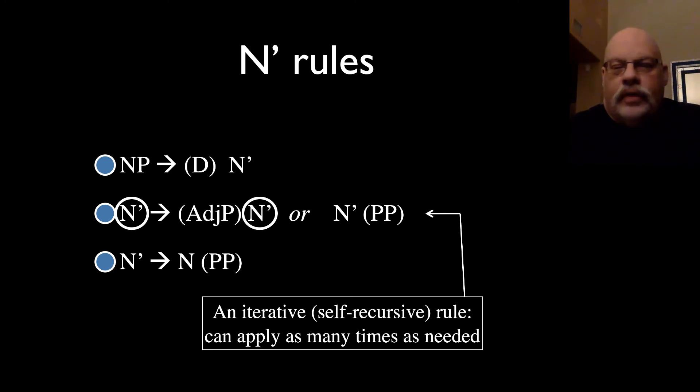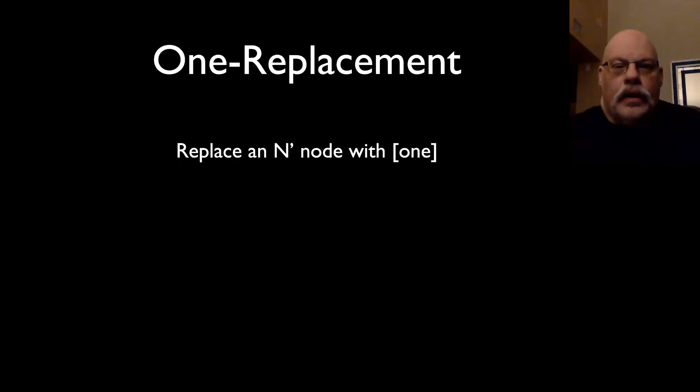Notice that the second rule has an interesting property. It's internally recursive or iterative. It can apply as many times as needed. So you can take an N bar category and create a new N bar category, create a new N bar category, et cetera. This means you can get as many of these adjectival and prepositional modifiers as you want. That's a neat effect. And it actually allows us to get rid of the Kleene plus that we had in our old rules. So you'll remember there was a little plus sign after the adjective and the prepositional phrase. Because this rule is internally recursive, we can get rid of that plus.